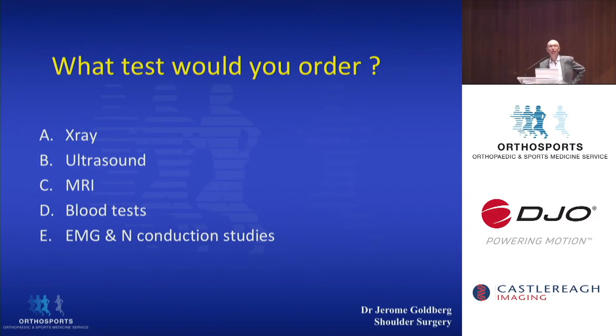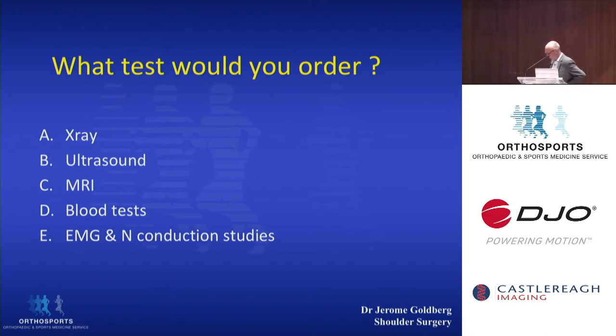Ivan, what tests would you order? You'd want an x-ray to exclude osteoarthritis, as that's the other part of your differential diagnosis. There's an increased risk of adhesive capsulitis in people with diabetes and thyroid problems, so a blood test is totally appropriate. I think occasionally you would order an MRI scan if there's any pre-existing history of trauma, because sometimes people who have a fall can tear their rotator cuff and develop a capsulitis at the same time. But if there's no history of trauma, I wouldn't bother with an MRI scan.